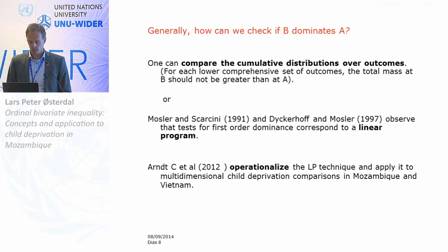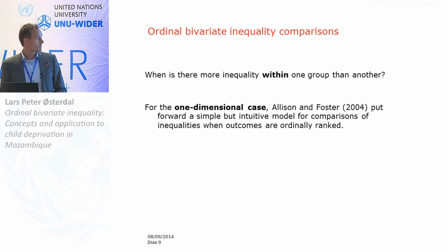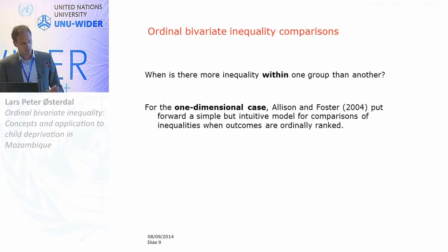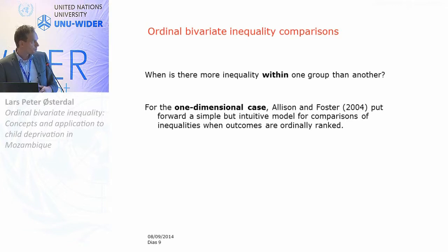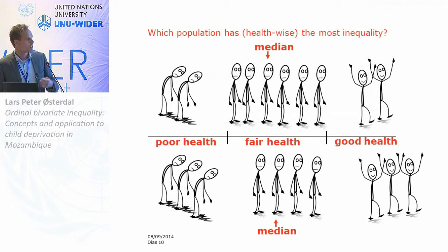That was ordinal comparisons of social welfare. However, the main focus here is ordinal comparisons of inequality. The question is: when is there more inequality within one group than another? For the one-dimensional case, there have been some recent contributions along these lines. A central reference for our work is the Allison and Foster Journal of Health Economics paper from 2004, which suggests a simple and intuitive model for making comparisons of inequality with only categorical, ordinal data. Allison and Foster themselves use an example of self-assessed health.